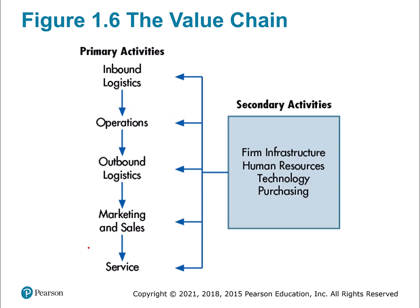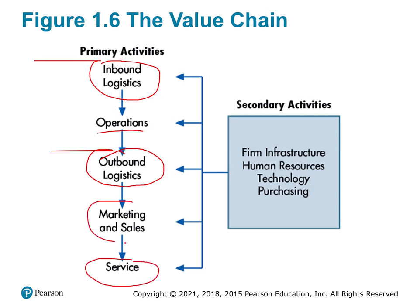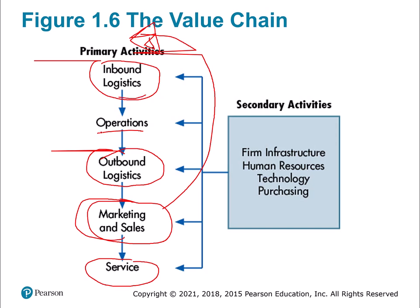One of the tools we'll use to analyze AIS systems is called the value chain — a theoretical framework for analyzing activities inside a firm. You can break it down into primary and secondary activities. Primary activities are: we have to get stuff, we do things with the stuff, we get it to our customers, we use marketing and sales to create demand, and then we service things at the end. Basically, we drive demand, we get stuff, we do things, we get it to the customer, and then we deal with any post-sale issues.